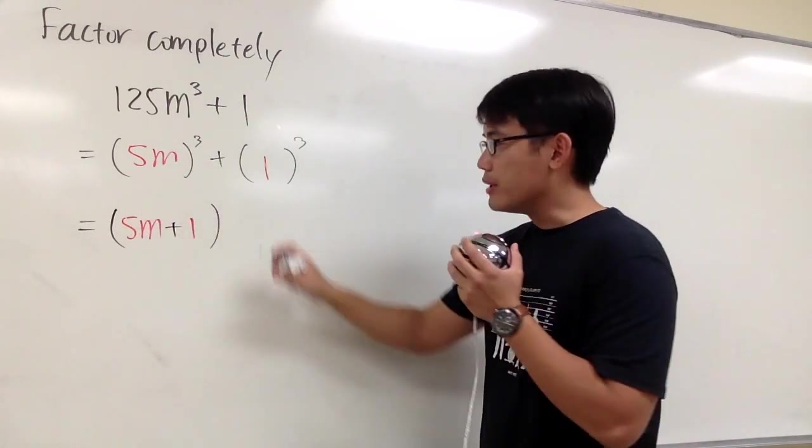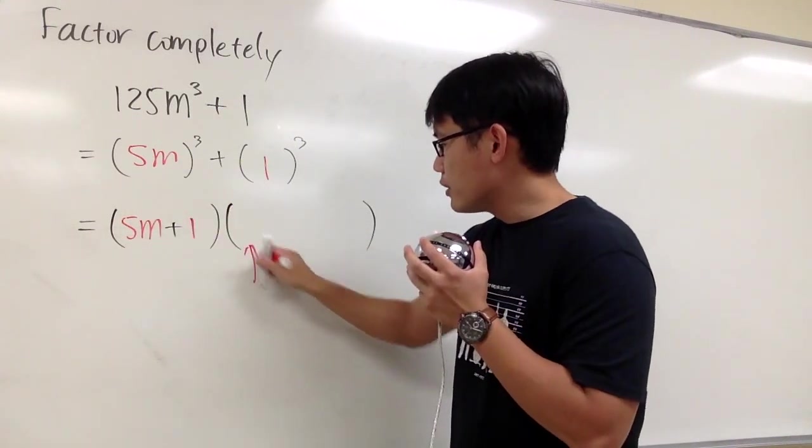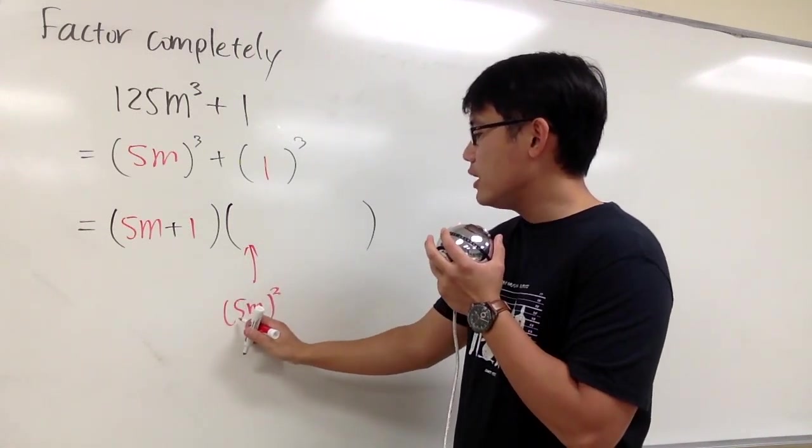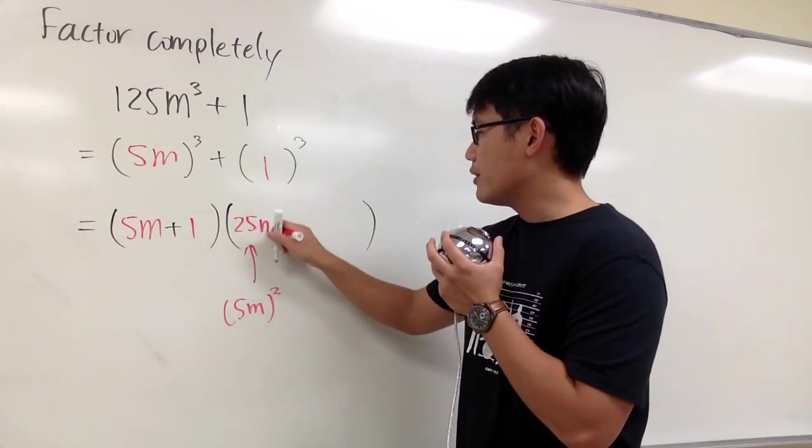For the second parenthesis, we are going to have this square. We have to work out the square though. 5m squared, so we put down 5 squared, that's 25, and then m squared.